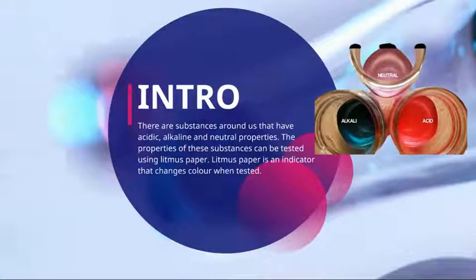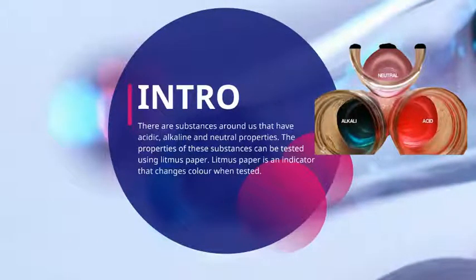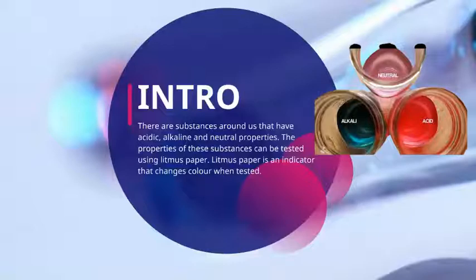There are substances around us that have acidic, alkaline and neutral properties. The properties of these substances can be tested using litmus paper. Litmus paper is an indicator that changes colour when tested. There are 3 main substances around us: acidic, alkaline and neutral.